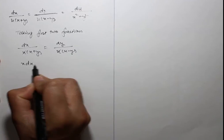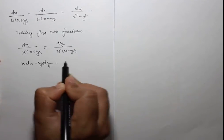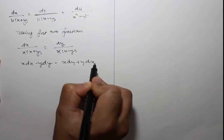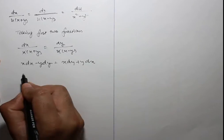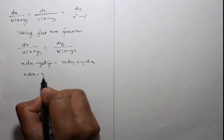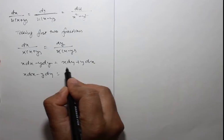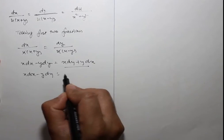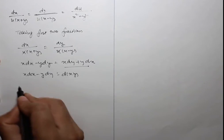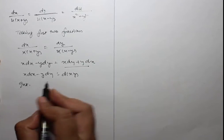This simplifies to x dx - y dy = d(xy). Integrating both sides gives x²/2 - y²/2 = xy + c₁.